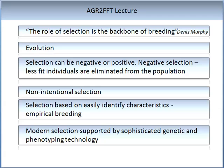Non-intentional selection is where selection occurs almost by accident. In the past, selection was based on characteristics that humans could easily identify, such as larger seed size. The simplest form of traditional grain breeding or selection involves planting the seeds into tilled fields, harvesting the grain and threshing out the seeds by mechanical aggregation. Just by growing the crop in this way, a huge selection pressure is established that favours plants that do not shed their seeds before harvest. Modern selection techniques are supported by sophisticated genetic and phenotyping technology.